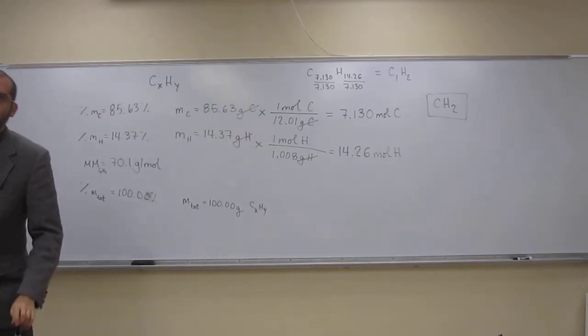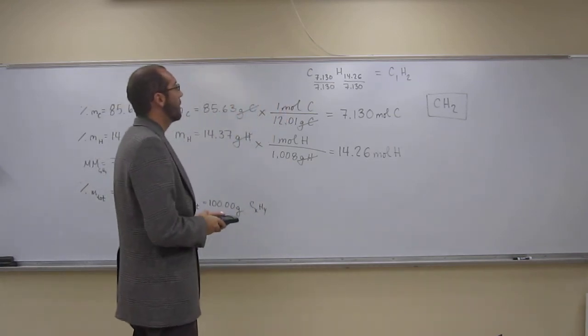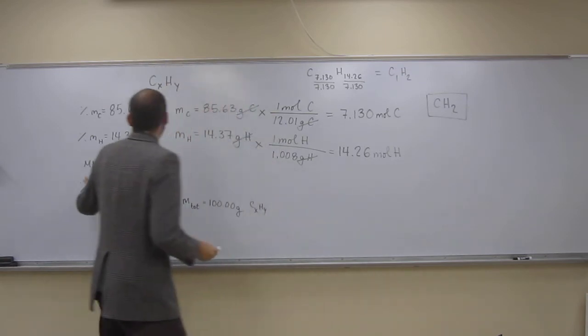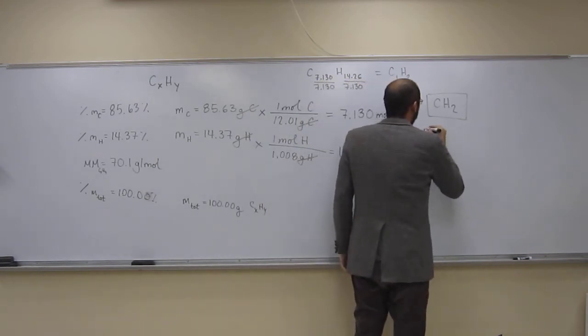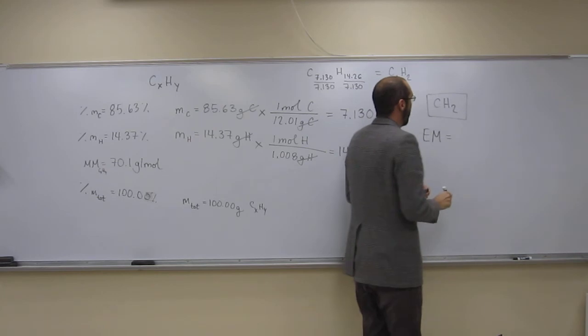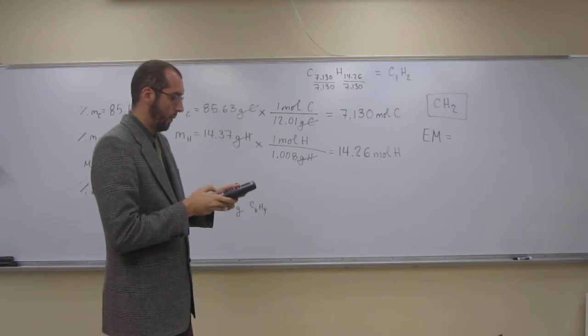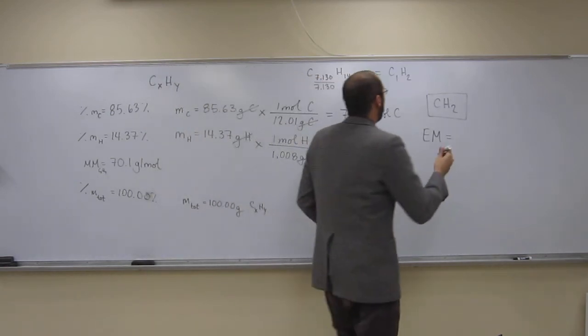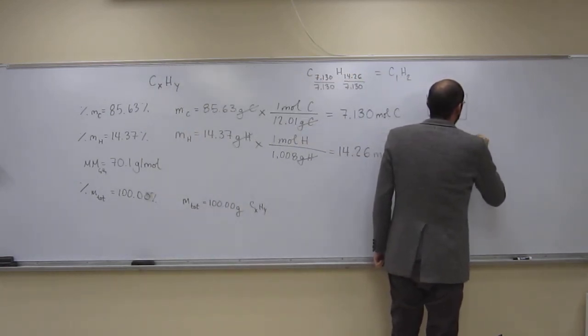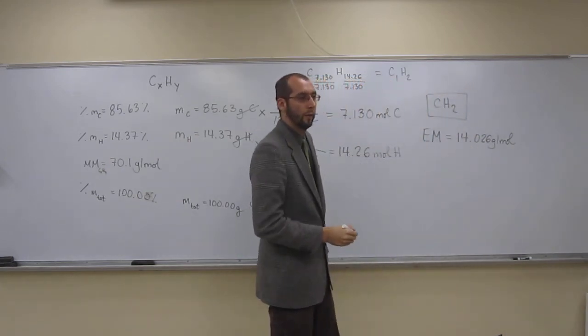I've got to switch pens, because they're all dying at the same time. So the thing we want to do now is figure out what is the empirical mass. We've got the molar mass over here. How do we do that? Well, we look at CH2 and we add it up. So, 12.01 plus 2 times 1.008. So, 14.026 grams per mole. That's the empirical mass.